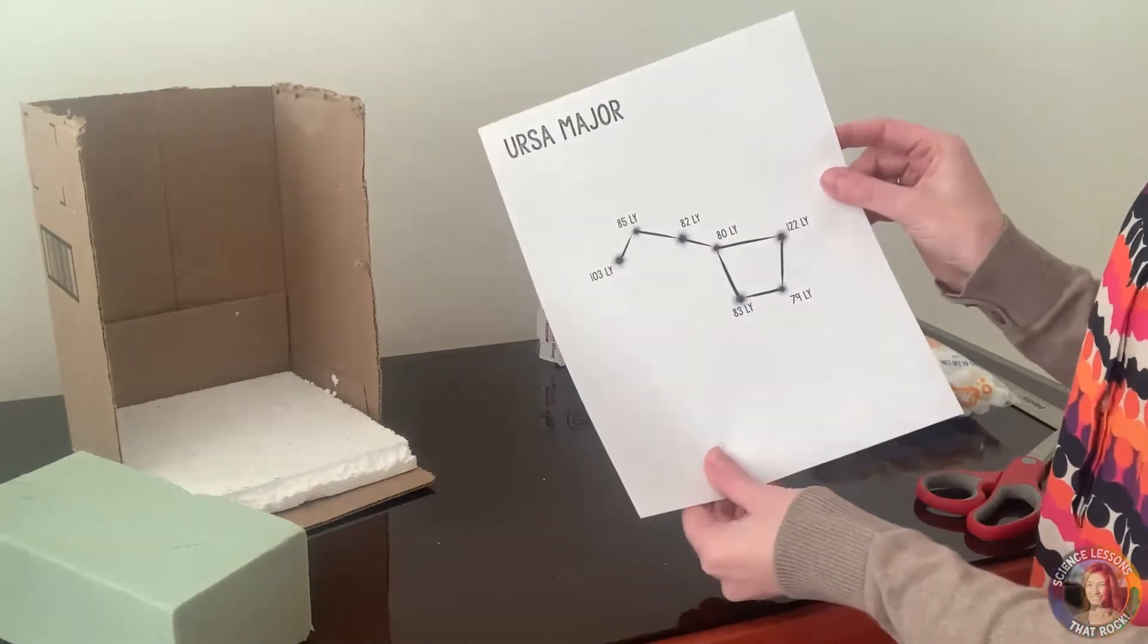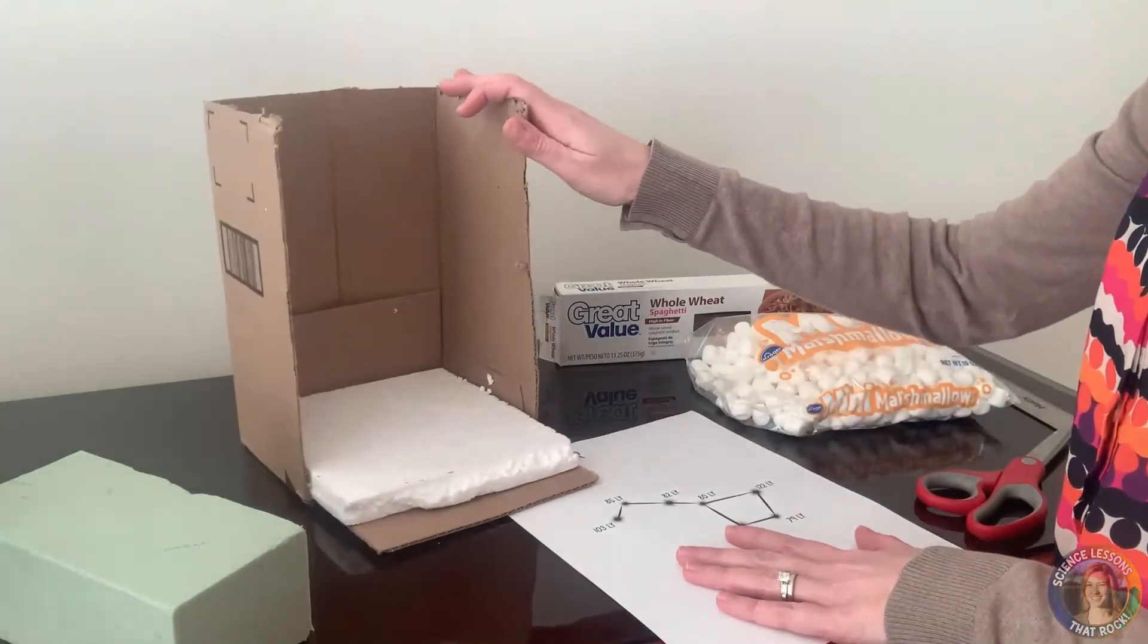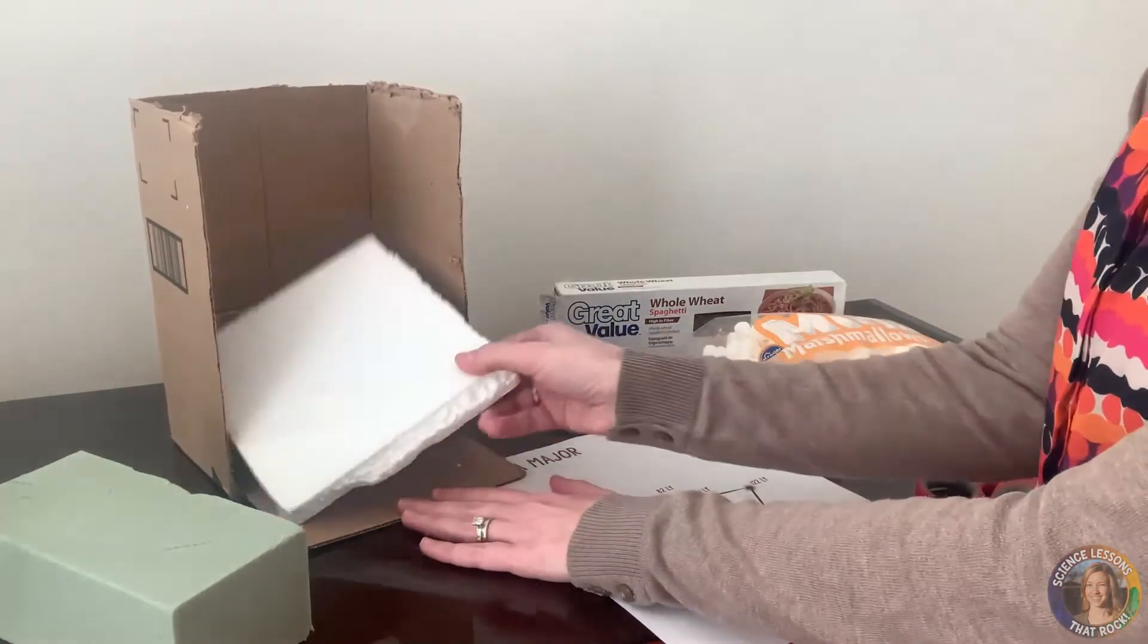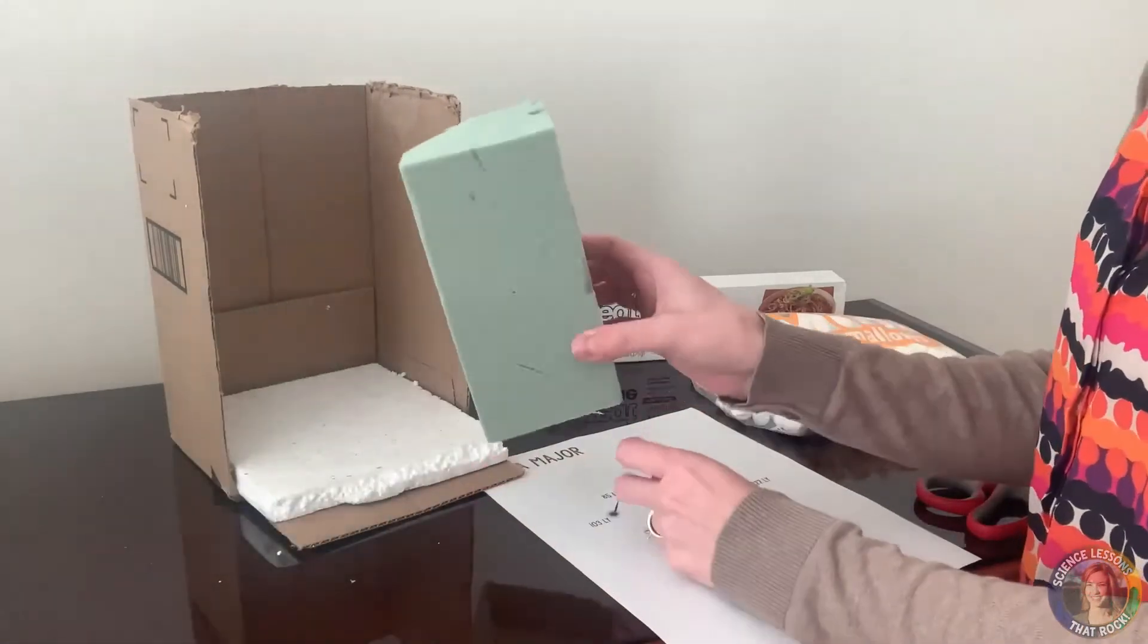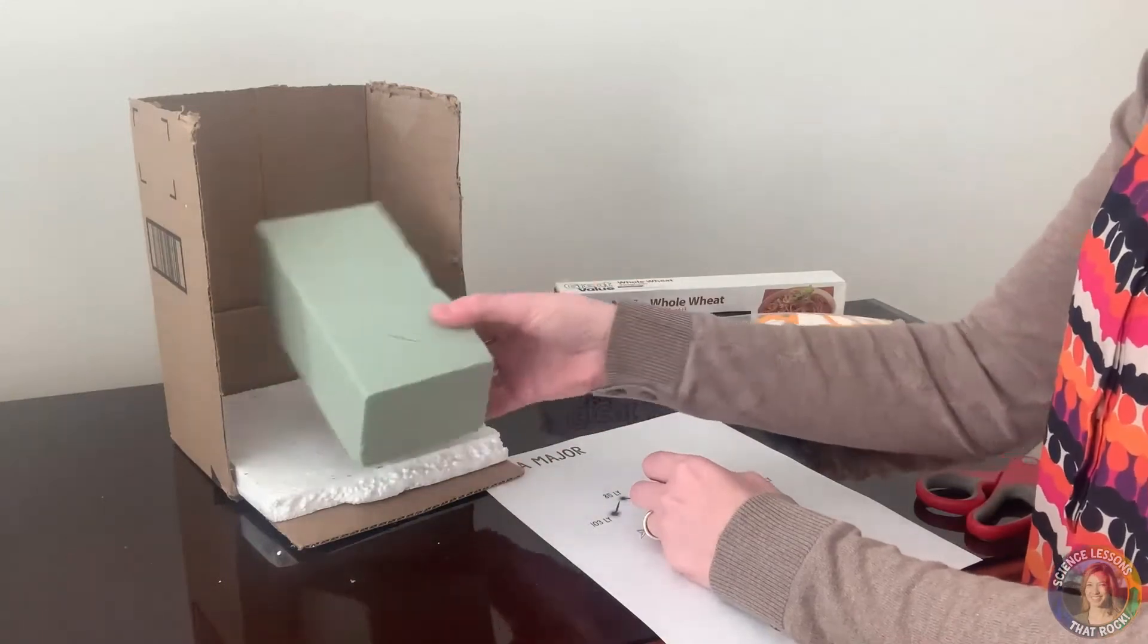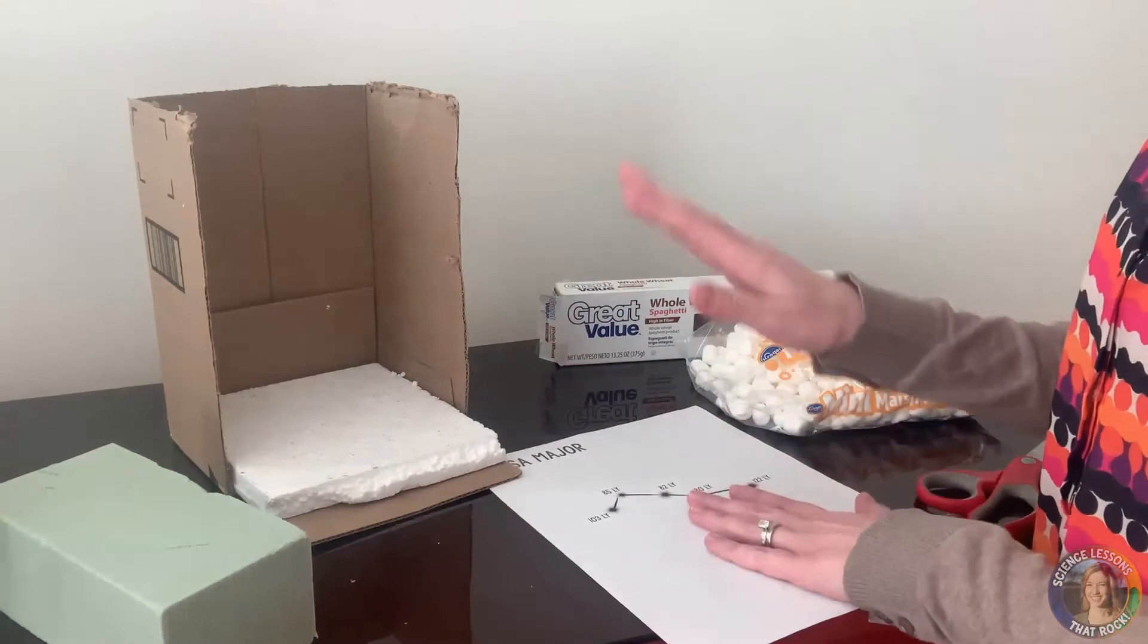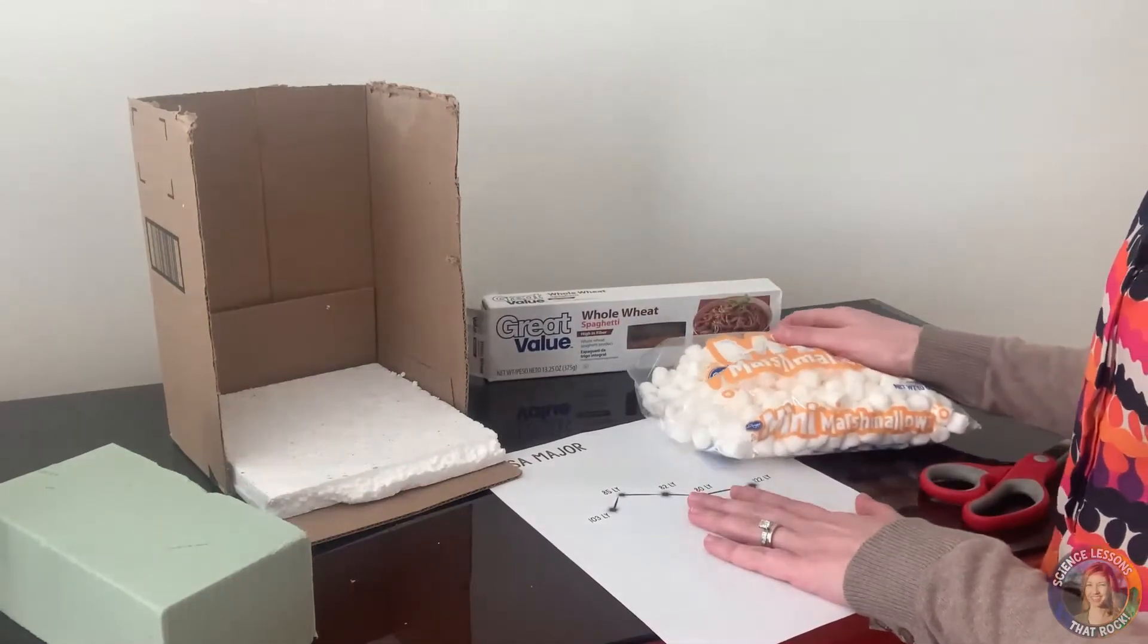So you're going to need a constellation, a shoebox or any sort of cardboard box, and then some type of foam down below. So this is just a piece of styrofoam. You can also get floral foam at the dollar store, it's like two for a dollar that you could cut and stick down below. And then for the stars we're going to use spaghetti and marshmallows.